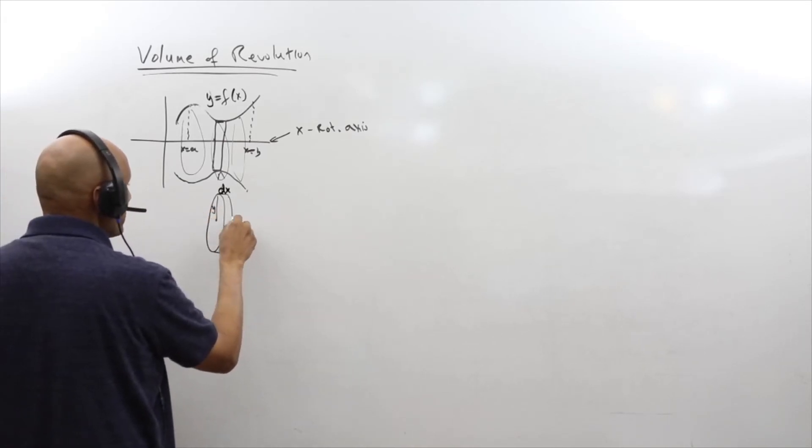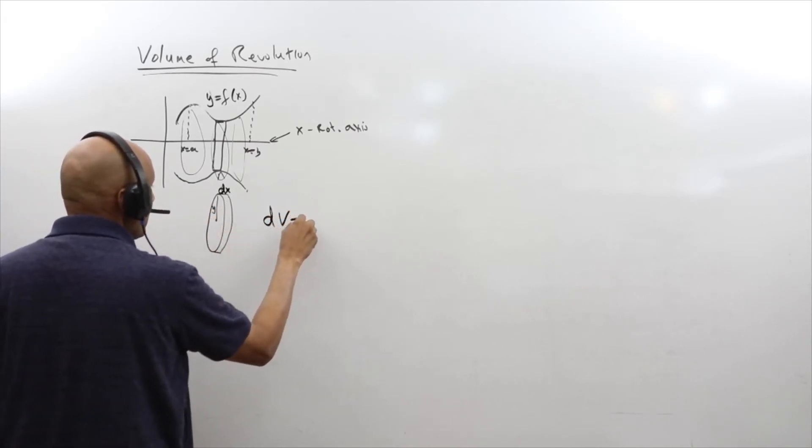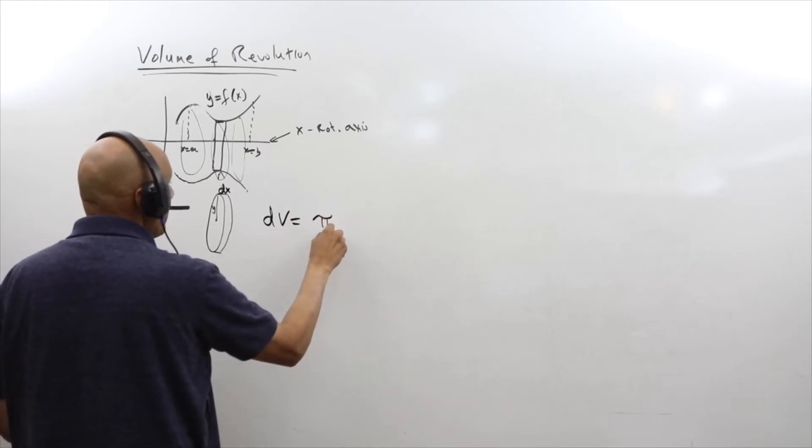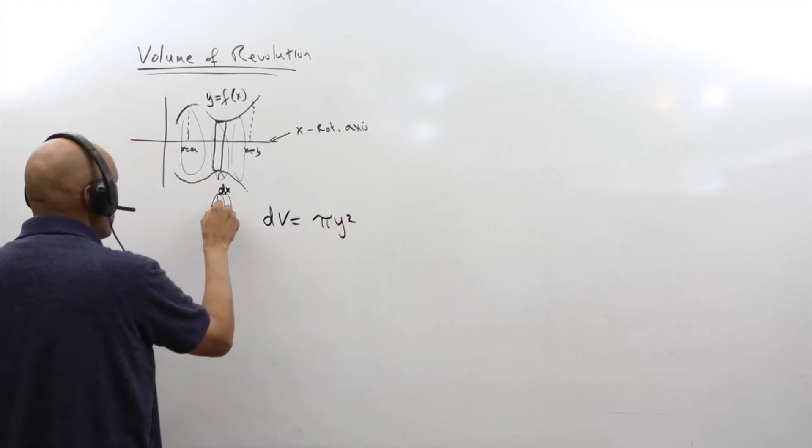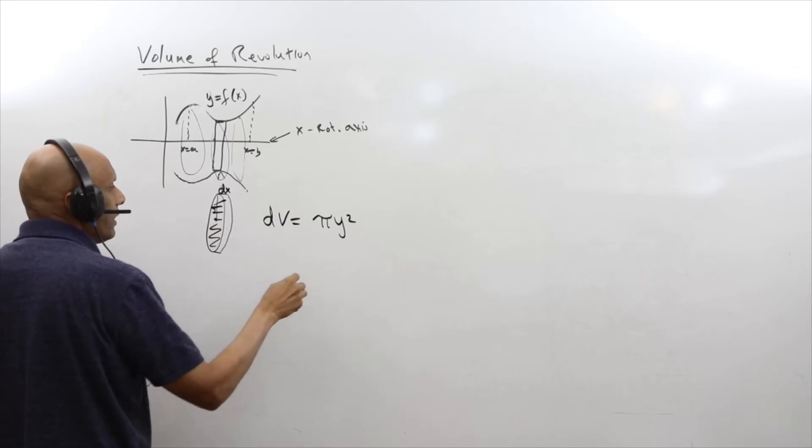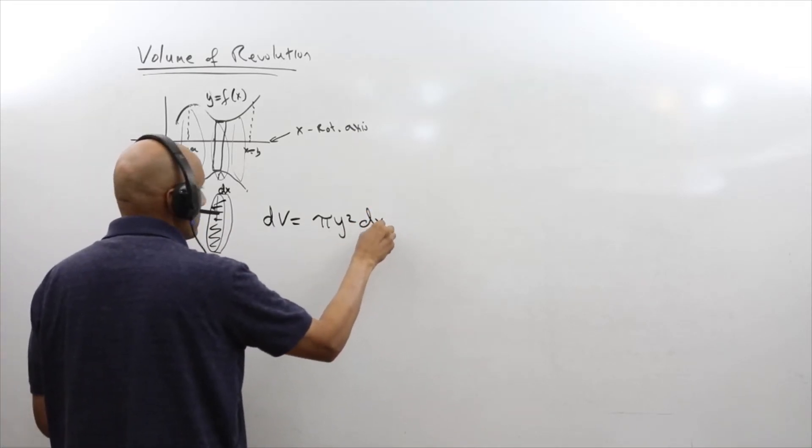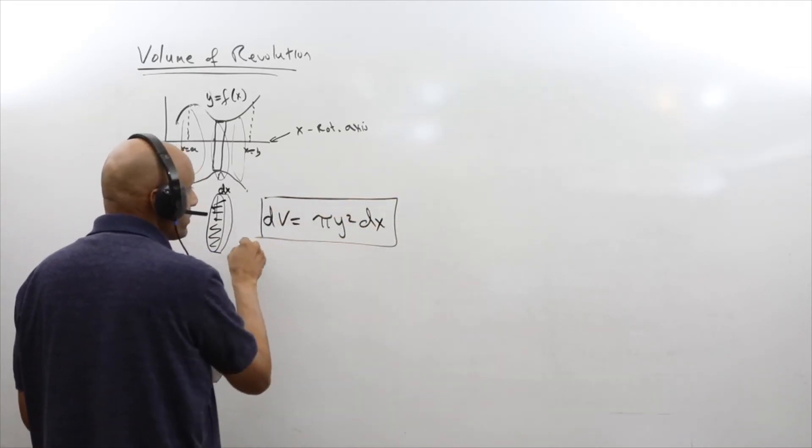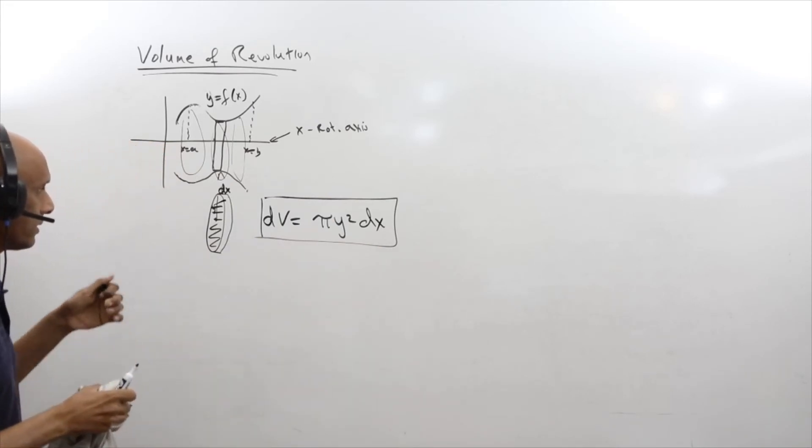So the surface area is nothing more than—we say the volume element dV is going to be π y² (this is the area) times dx.